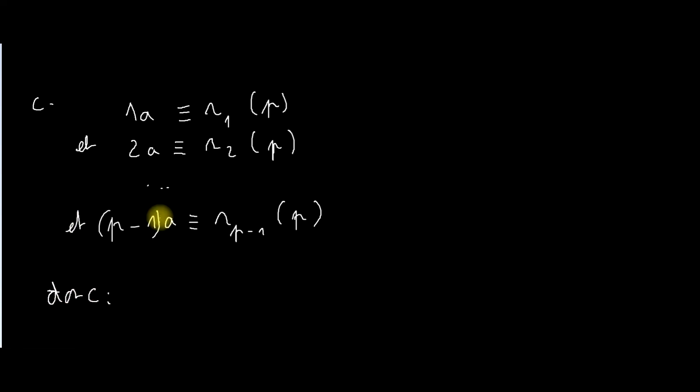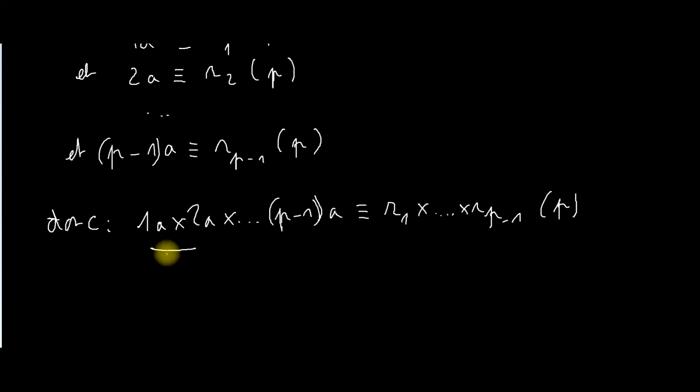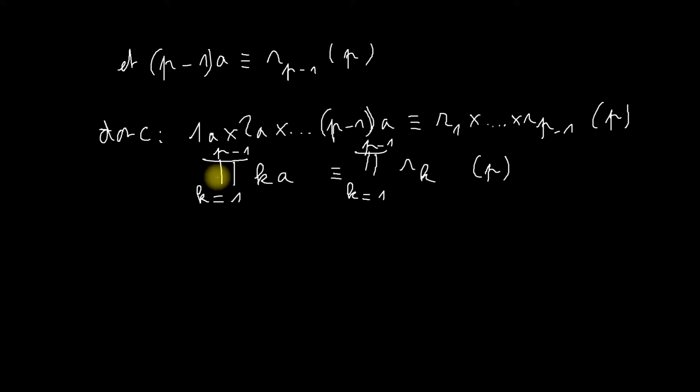Si je fais le produit, tout ça, alors c'est une implication. Je vais obtenir 1A fois 2A, etc., fois P moins 1 A, qui va être congru à R1 fois R2 fois, etc., RP moins 1. C'est-à-dire, je peux réécrire ça, modulo P bien sûr, je peux réécrire ça avec le symbole du produit pour que vous voyez un peu à quoi ça ressemble. Donc, c'est le produit pour K variant de 1 à P moins 1 des KA, qui est congru au produit pour K variant de 1 à P moins 1 des RK modulo P. Ce qui est à gauche, si je réorganise mon produit, je vais obtenir P moins 1 factoriel, parce que je vais faire 1 fois 2 fois 3, etc., fois P moins 1. Multiplié par A puissance P moins 1, puisqu'il y a P moins 1 facteurs A.